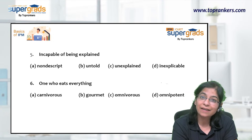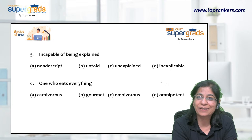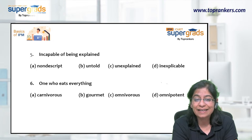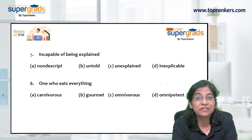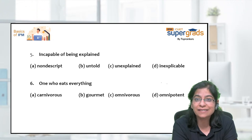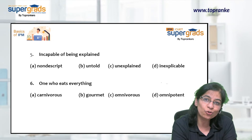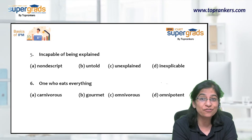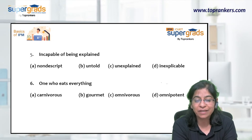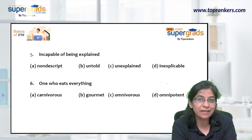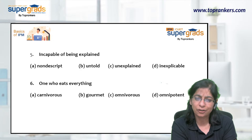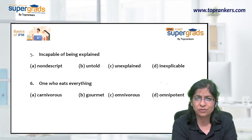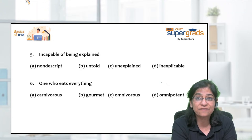Next: 'One who eats everything.' Carnivorous — 'carn' is a root word meaning flesh. Carnivorous animals are those that eat flesh. But here we're talking about someone who can eat everything, not just flesh. Carnivorous is one side of the story — someone who can only eat flesh.